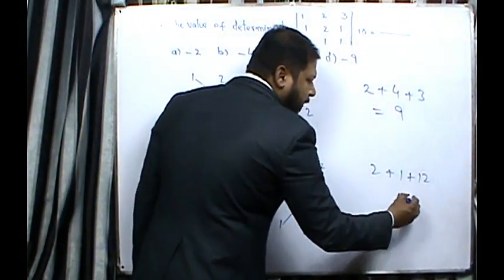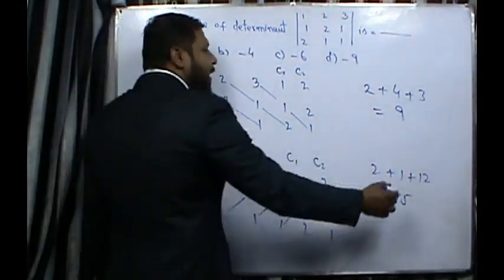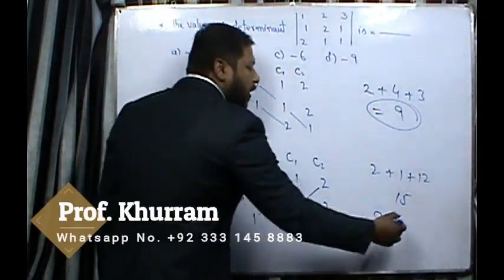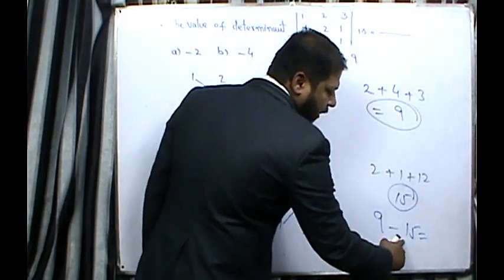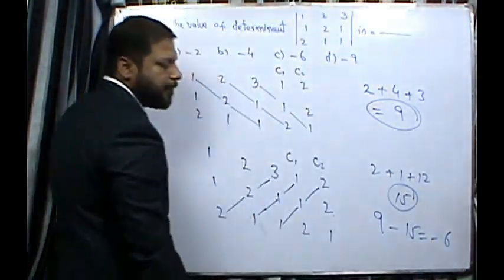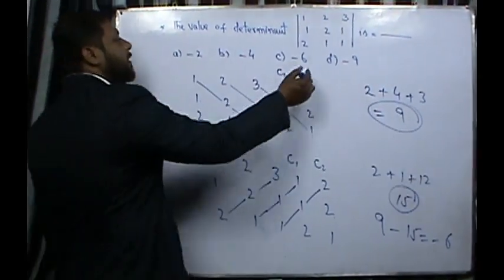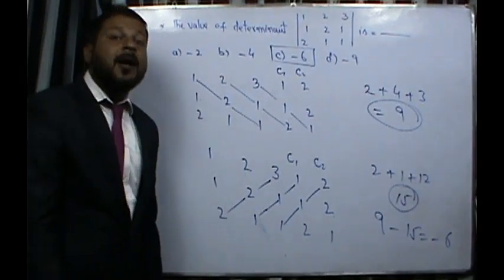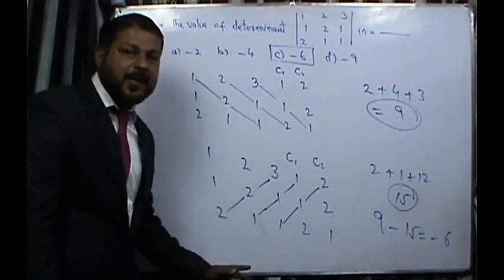Left diagonals minus right diagonals: 15 minus 9 minus 15 minus 6. The result from this shortcut determinant calculation is -6.